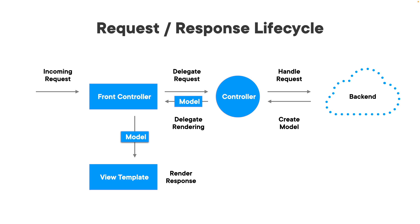Once it's gone down to our view — our JSP page — we return control back to our front controller, and then that returns back to our browser or through our web service call. This whole thing is divided up into three parts: our model, where the model gets created; our view, representing the UI; and our controller. That's our model-view-controller design pattern, and we're going to walk through all of these pieces throughout our entire application.